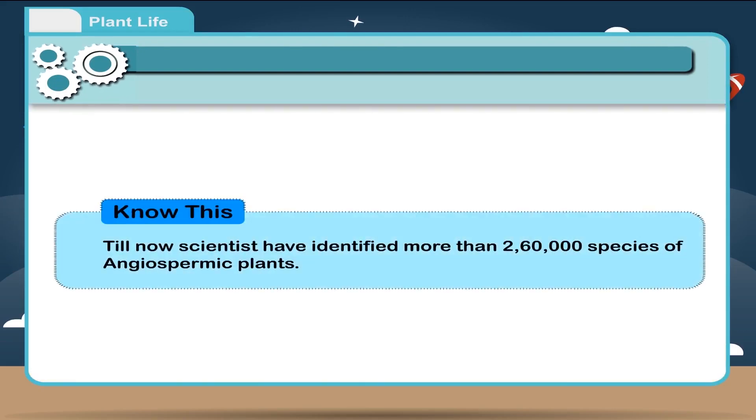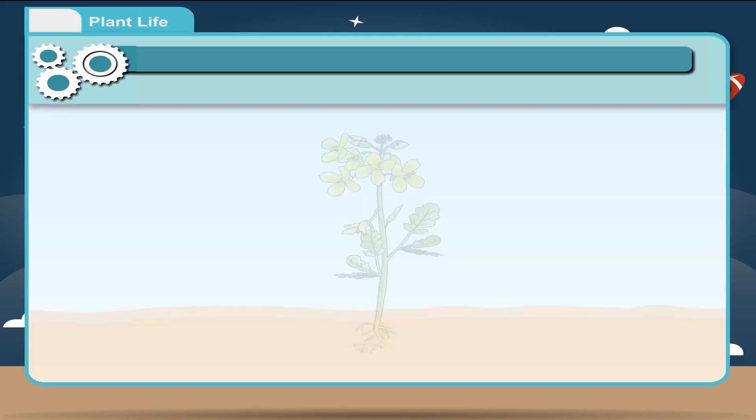Know this: Till now, scientists have identified more than 260,000 species of angiospermic plants.